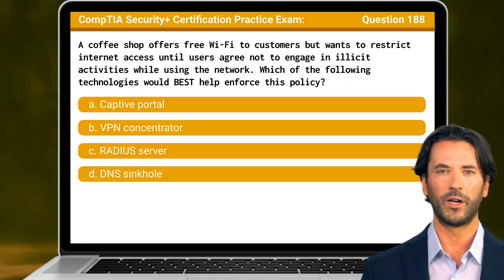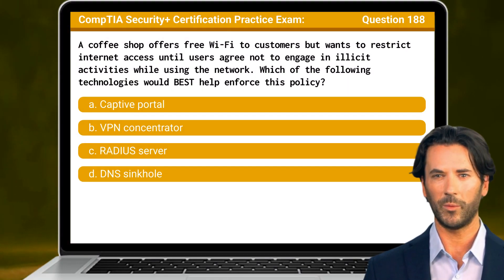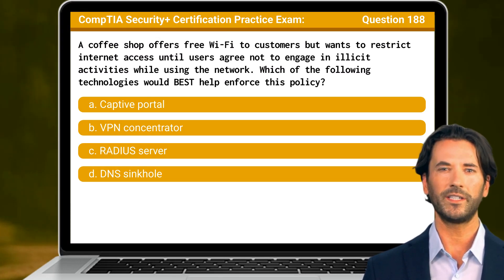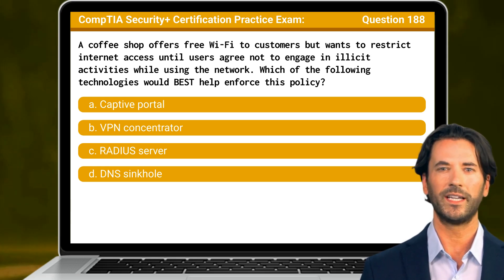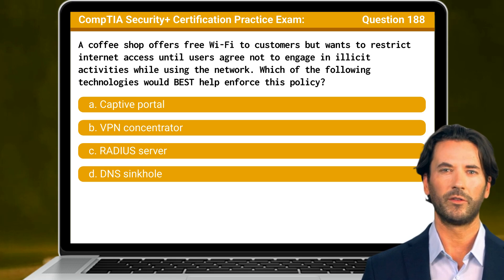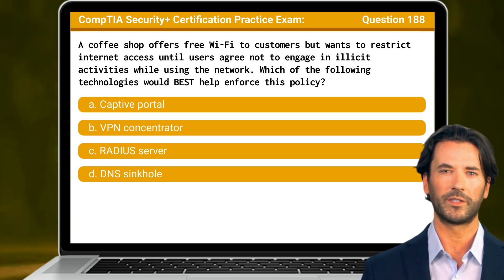Question 188. A coffee shop offers free Wi-Fi to customers but wants to restrict internet access until users agree not to engage in illicit activities while using the network. Which of the following technologies would best help enforce this policy?